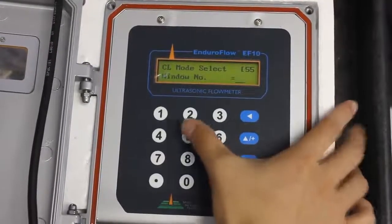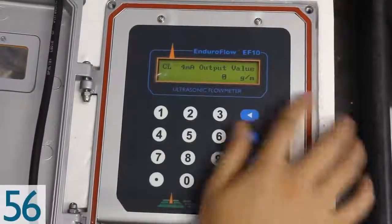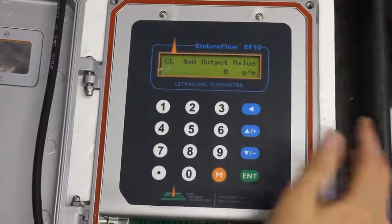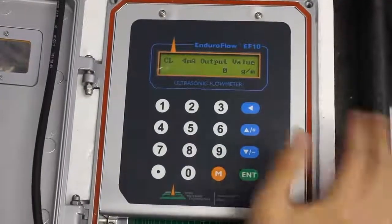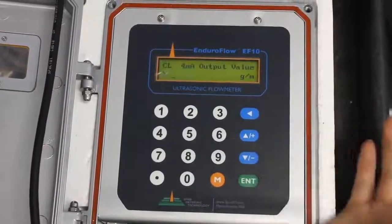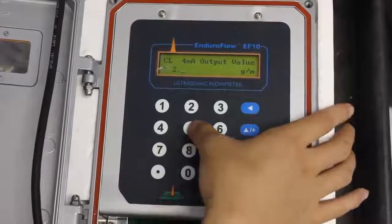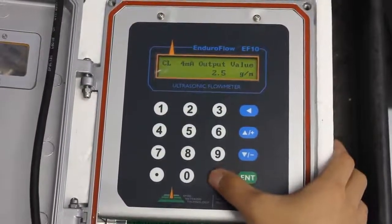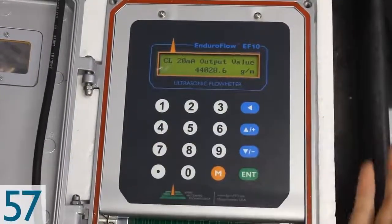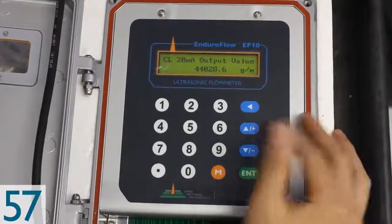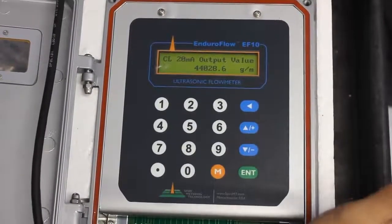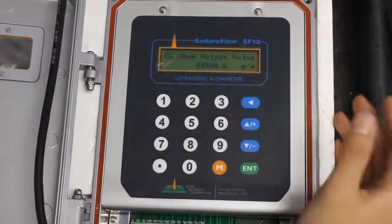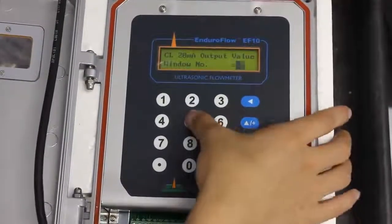Next you go to menu 56. And here you're going to select, set the flow rate slash energy value corresponding to the 4 milliamp current. Let's just say it was like 2.5. Okay. Next you go to menu 57. And here you set the flow rate or energy value corresponding to 20 milliamp current. Once you've selected the values that you need, you go to menu 59. And here it's going to show you the current output of the flow.